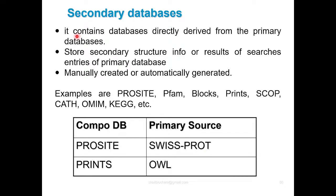Secondary databases contain data directly derived from primary databases. A researcher or computer software engineer takes those databases and applies tools to them — it will create new analysis and new statistics, and compare multiple databases. The results are then published. Secondary databases store secondary structure information, results of searches, and entries from primary databases — they can be manually created or automatically generated. Examples include PROSITE, PRINTS, and BLOCKS.